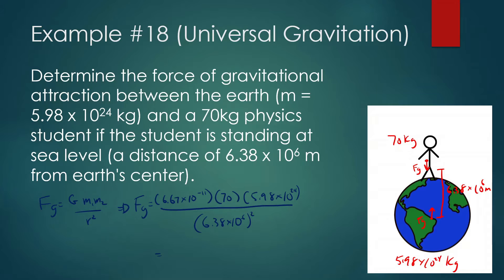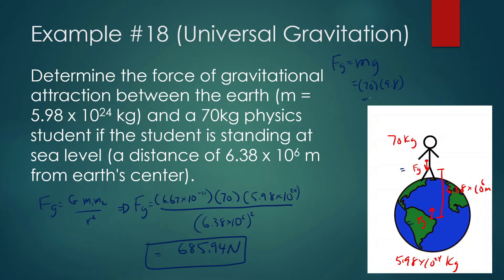You should get something like 685.94 N. That's the force of gravity the physics student feels, and also the force the Earth feels from the physics student. We can verify this: force of gravity equals mass times gravity, so 70 × 9.8 = 686 — pretty much the same number. Just know the universal gravitation equation can be used for everything and anything. The mg equation is just for when we're on Earth; the universal gravitation equation can be used for anything — that's why it's called universal gravitation.